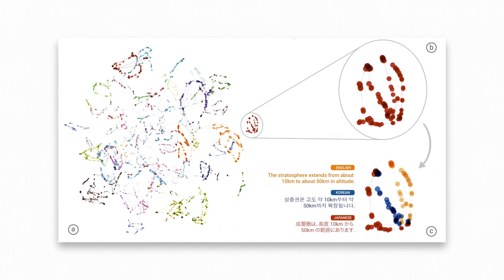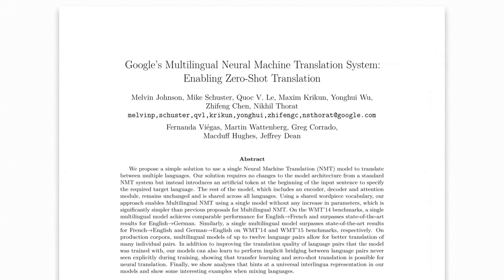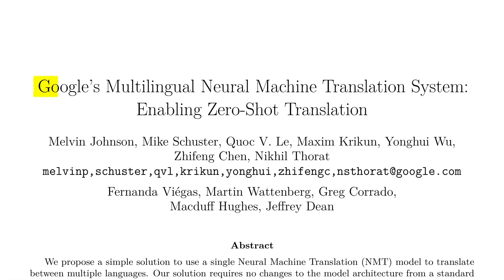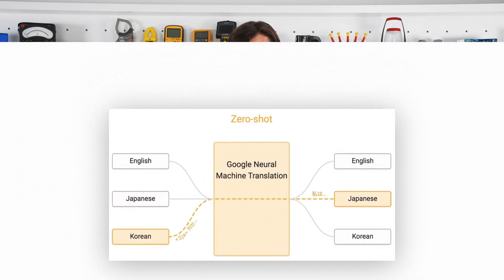This complicated neural network image is taken from Google's multilingual neural machine translation system, enabling zero-shot translation paper. This solution enables Google Translate to generate a reasonable translation between two languages that it has never been taught to do so, and it does it with a new language that it created.